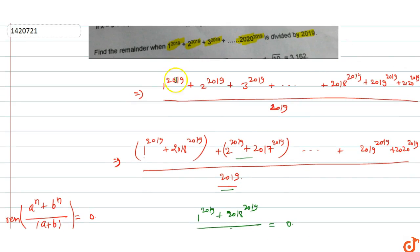Alternatively, using the remainder theorem directly: 1 divided by 2019 gives remainder 1, 2 gives 2, up to 2018 gives 2018. For 2019, the remainder is 0. For 2020, remainder is 1. When we pair terms like 1 and 2018 (which give -1 and +1), they cancel out. The remaining value is 1, so the total remainder is 1.